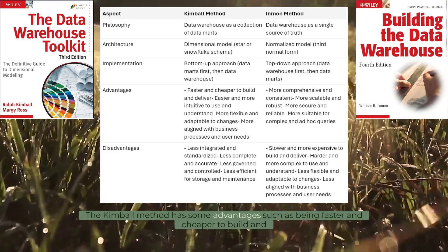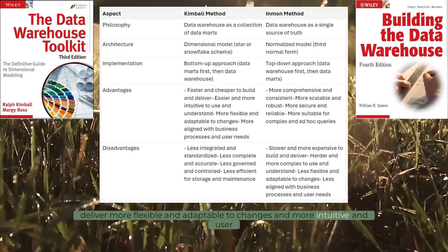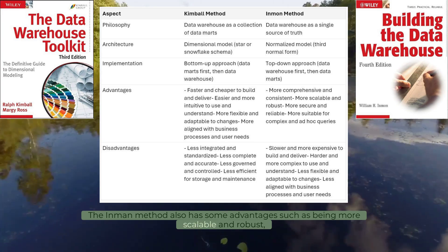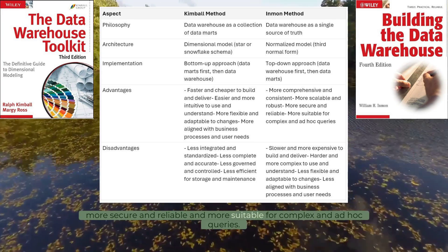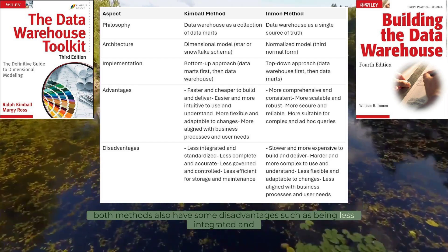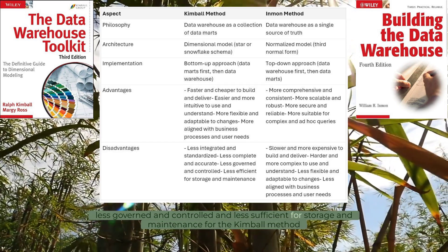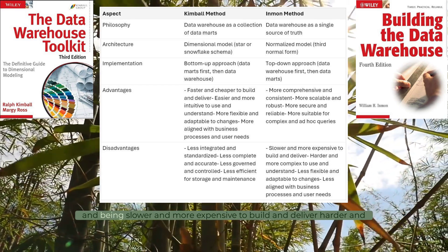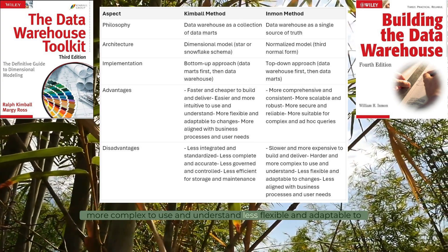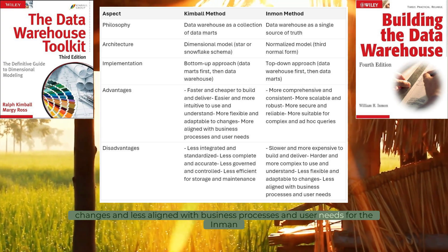The Kimball method has advantages such as being faster and cheaper to build and deliver, more flexible and adaptable to changes, and more intuitive and user-friendly. The Inman method has advantages such as being more scalable and robust, more secure and reliable, and more suitable for complex and ad hoc queries. However, both methods also have disadvantages. The Kimball method can be less integrated and standardized, less complete and accurate, less governed and controlled, and less efficient for storage and maintenance. The Inman method can be slower and more expensive to build and deliver, harder and more complex to use and understand, less flexible and adaptable to changes, and less aligned with business processes and user needs.